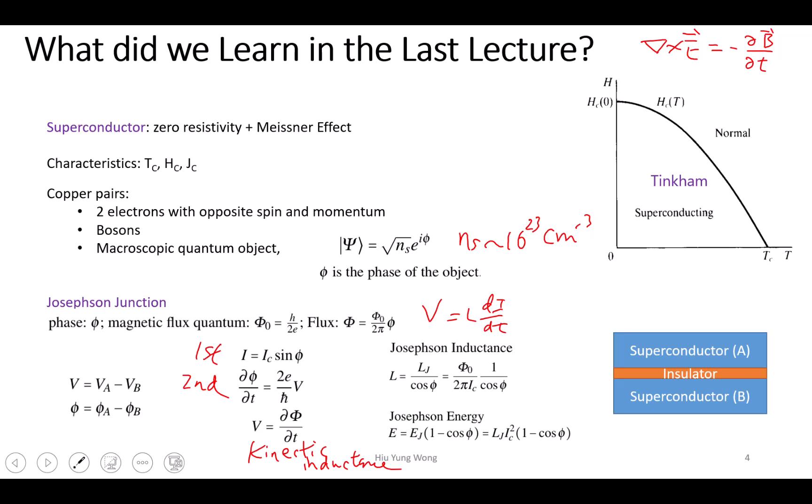Like an inductor, it stores energy. If there's current passing through an inductor, the energy in an inductor is ½LI². So if you have current going through an inductor, the total energy is like this. Similarly, if you have current going through the Josephson junction, which is a superconductor, then it has energy like this.